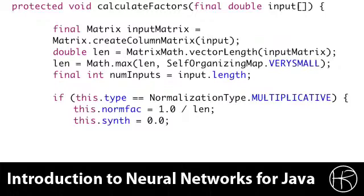We're going to get the vector length of the input matrix, and we are going to make sure that the input length has not grown too small. We have a predefined VERYSMALL variable that we will use. We establish this as a floor and do not allow the vector length to go below that. We also determine the number of inputs, which will be used later, and we check to see if this is multiplicative input or not.